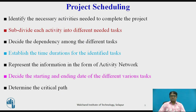Software project scheduling is an important project planning activity under the supervision of a project manager. To schedule a project, a manager needs to: identify the necessary activities needed to complete the project; subdivide each activity into different needed tasks; decide the dependency among different tasks; establish the time duration for identified tasks; represent the information in the form of an activity network; decide the starting and ending dates of various tasks; and determine the critical path, which represents the duration of the project.